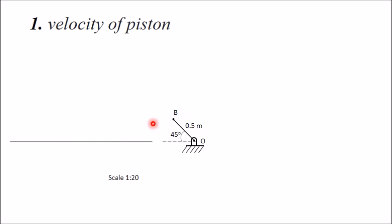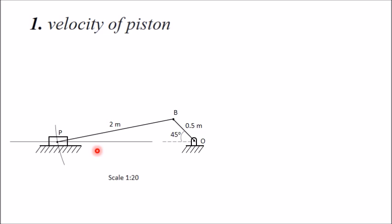From point B, take the connecting rod length of 2 meters (converted as 2/20 centimeters), draw an arc with center B cutting the horizontal line, and mark that intersection as P. Join B to P — this represents the 2-meter connecting rod. Draw the piston around P. Note that two points are marked at the same location: P on the moving piston, and A on the fixed guideway.